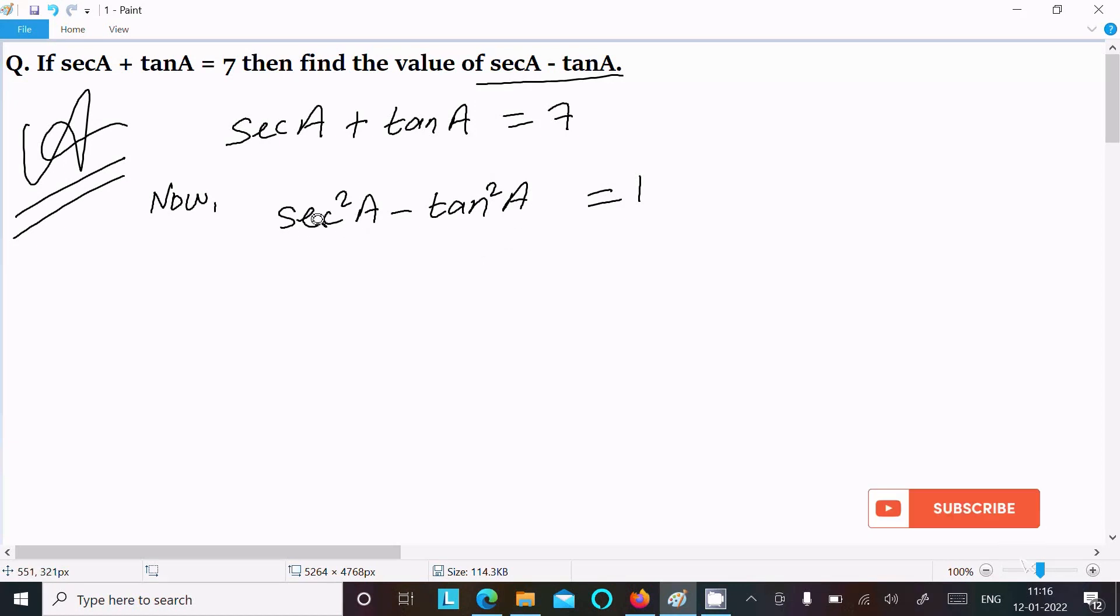Now we can write this in the form of a square minus b square, or we can write this one as secA square minus tanA square equal to 1. So suppose this is a square minus b square.